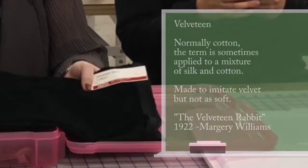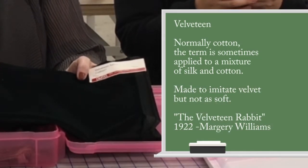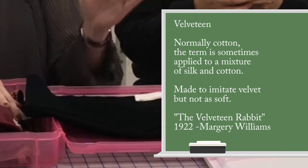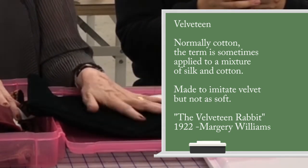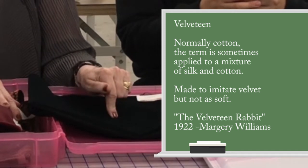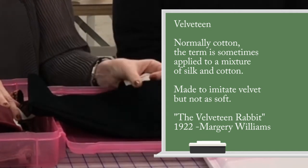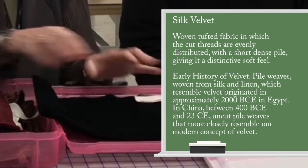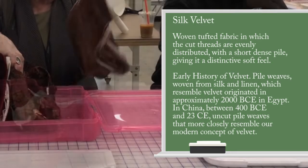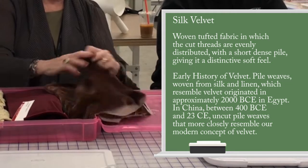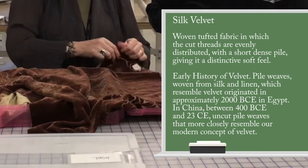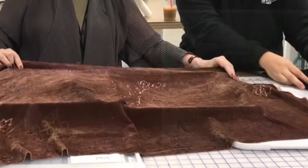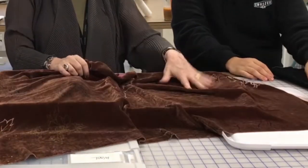This is called velveteen. Velveteen is cotton — it's an imitation of silk velvet. Plush toys, for instance — there's a children's story, the velveteen rabbit. You get a sense of what it feels like, and it also only smooths in one direction. But it is cotton. Silk velvet — this is silk velvet — it is really, really soft. That's the difference: that's the cotton imitation of this.